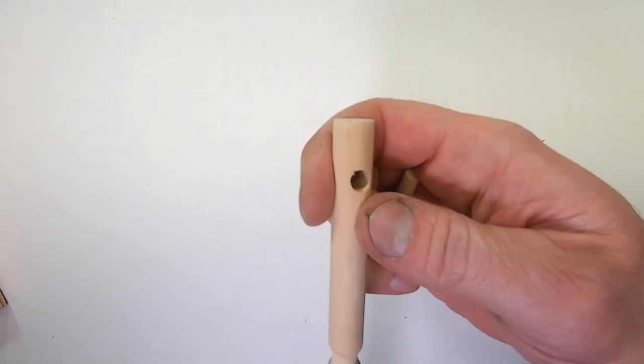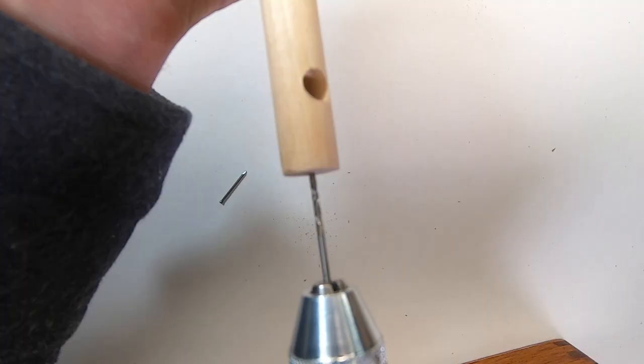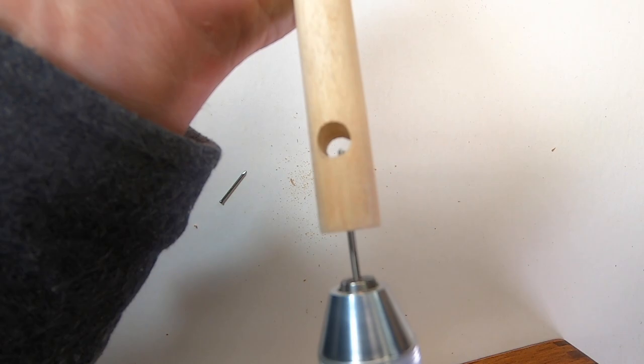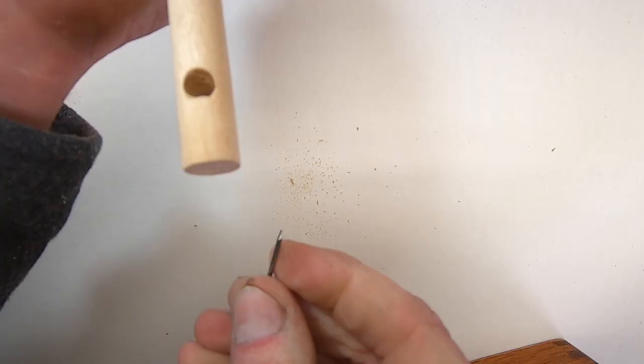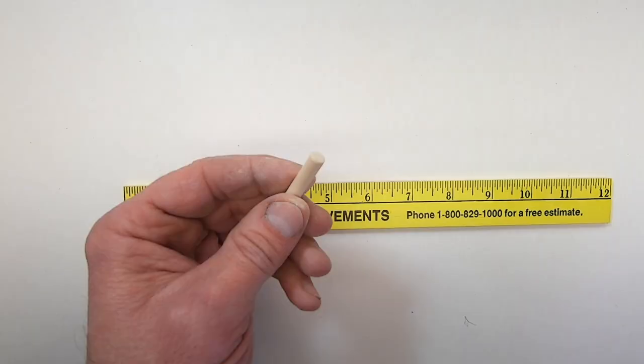Test fit the smaller dowel. It should slip in nicely, not too snug and not floppy. I'm pre-drilling the bottom of the dowel for the nail. Drill it straight. Mine was a bit crooked which gave me a little bit of a problem later.